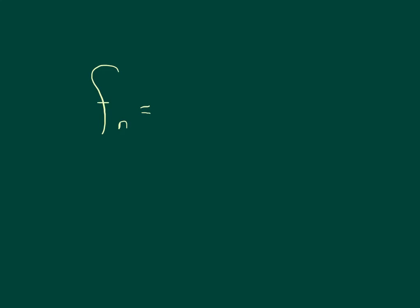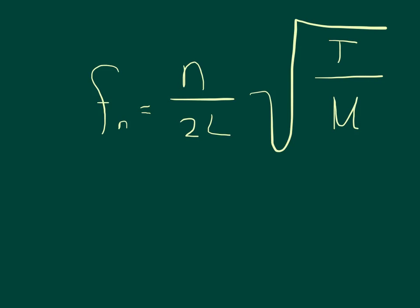is equal to the number of overtones, or you would say the number of the harmonic, divided by 2 times the length, multiplied by the square root of the tension divided by the linear density.